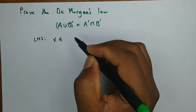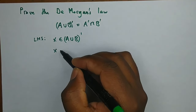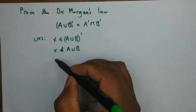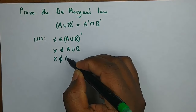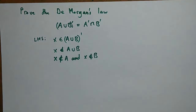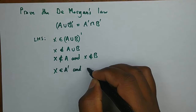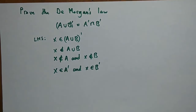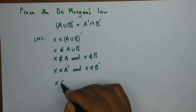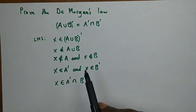Let x be a member of (A∪B)'. If it's a member of the complement, then x is not a member of A∪B. Since what we're looking for is an intersection, we can say x is not a member of A and x is not a member of B. If it's not a member of A, then x is a member of A', and x is a member of B'. Putting these together using 'and', x is a member of A'∩B'. We have shown that the left is also the right.